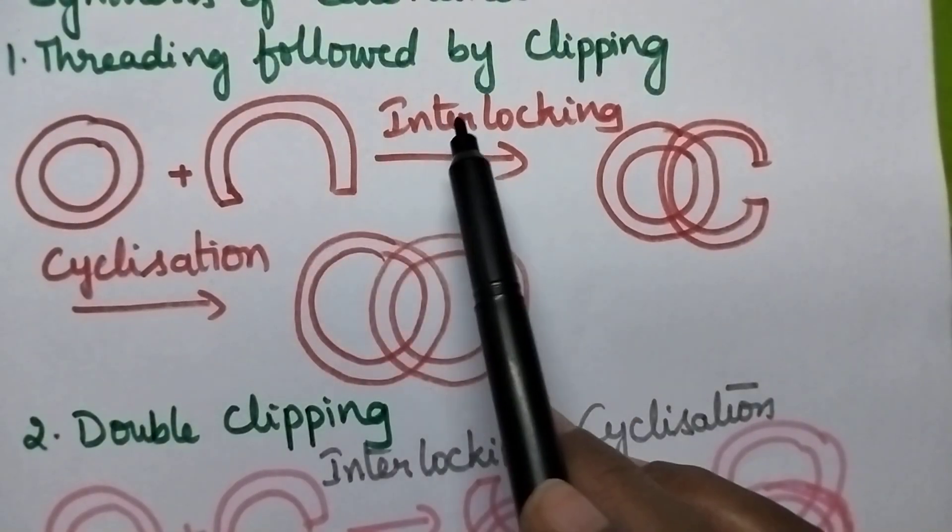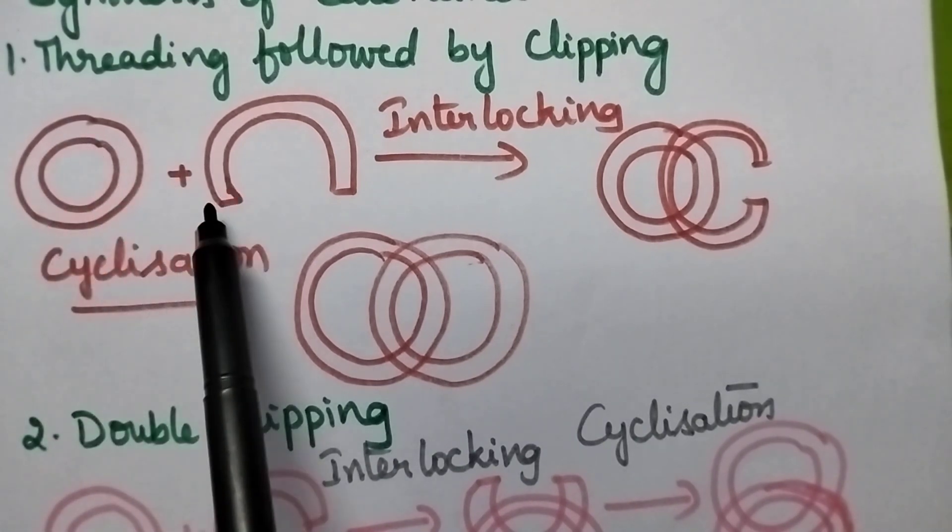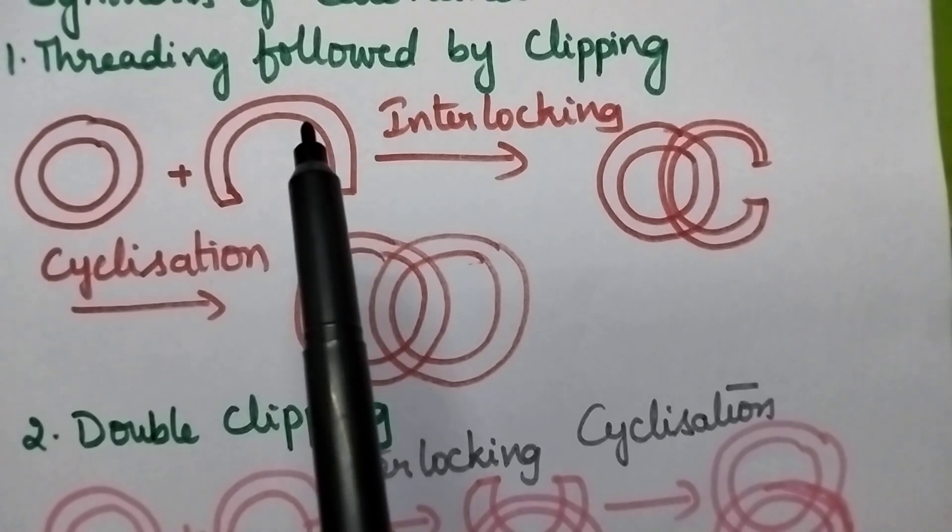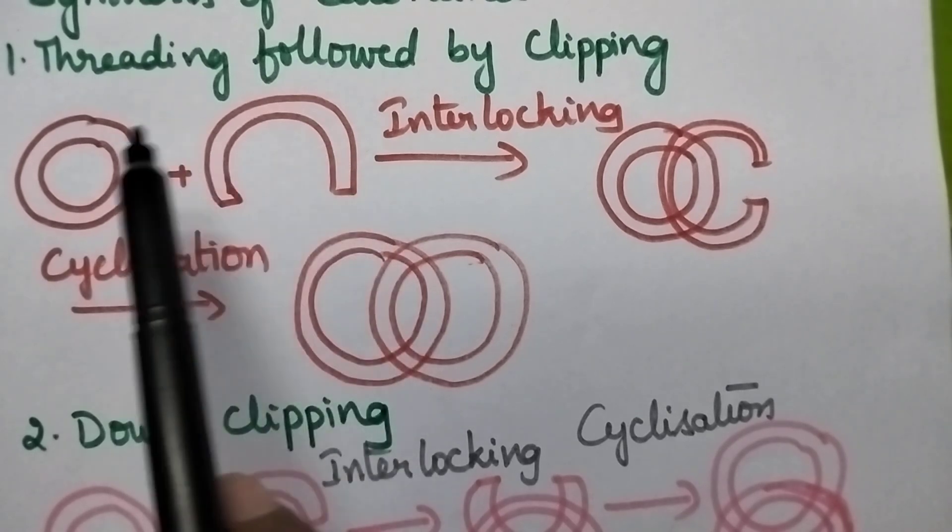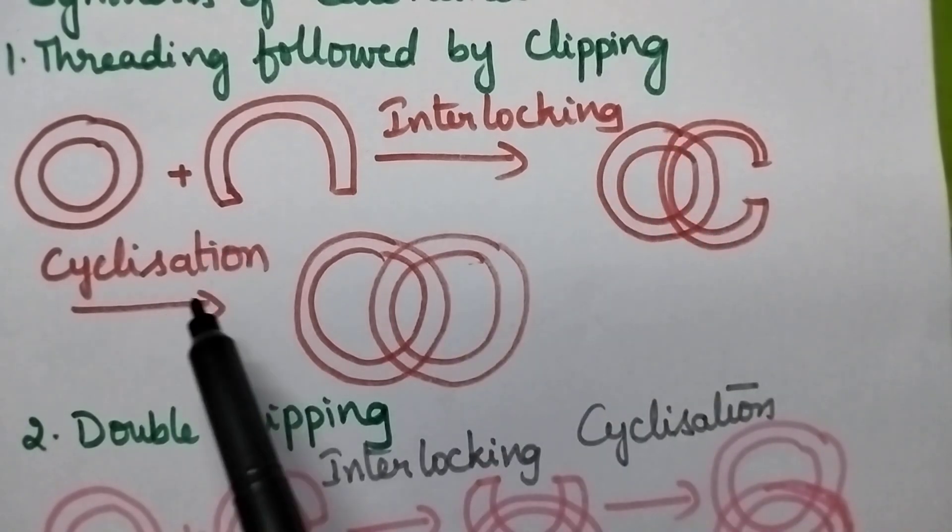Initially moving to the threading followed by clipping process, here one macrocycle is complete and the other one is partial. So initially the partial macrocycle is interlocked into the another macrocycle and in the second step cyclization takes place.